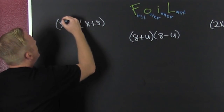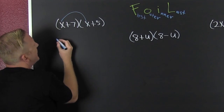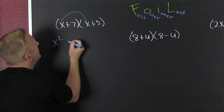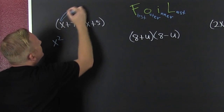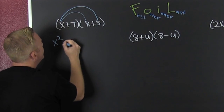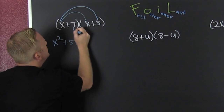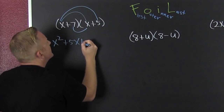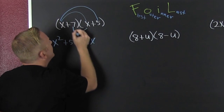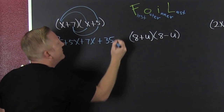So then, we first — that's x times x, or x squared. Then we outer — that's plus 5x. And then we inner — that's plus 7x. And then finally we last — that's plus 35.